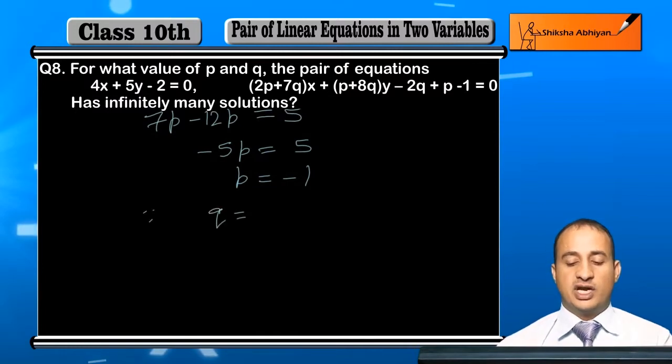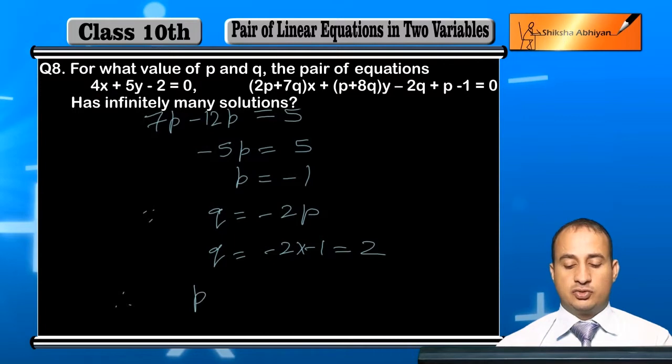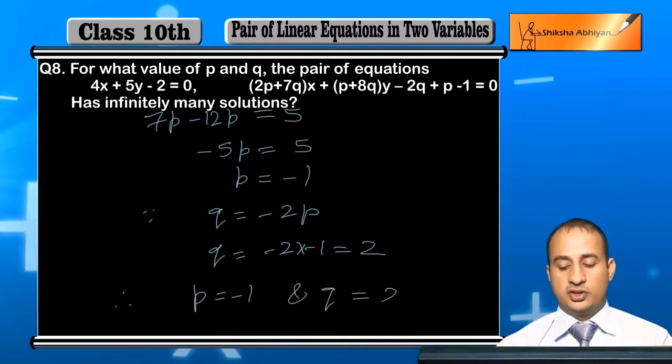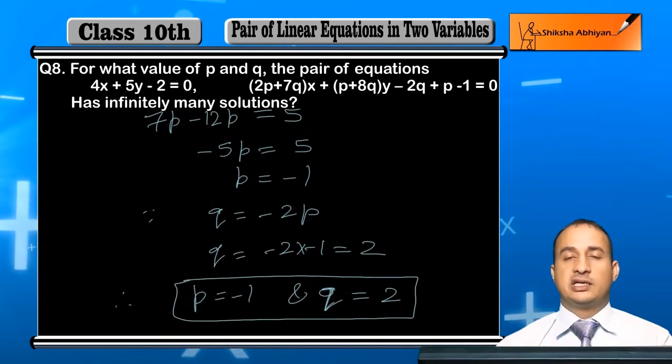Since Q is equal to minus 2P, and P value is minus 1, then Q equals minus 2 times minus 1 equal to plus 2. Therefore, P is equal to minus 1 and Q is equal to 2. And these are the values we needed to obtain.